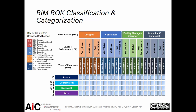To make it more specific, we're looking at a couple of different dimensions. The first dimension is the level of implementation, including Plan It, Coordinate It, Manage It, and Do It. Then we're looking at different industry sectors and the roles of different users, including designers, contractors, facility managers, operators, consultants, and generalists. We also looked at the different levels of performance, including intro, middle, and full performance level. Finally, we're examining different types of knowledge, including organizational-specific knowledge as well as project-specific knowledge.